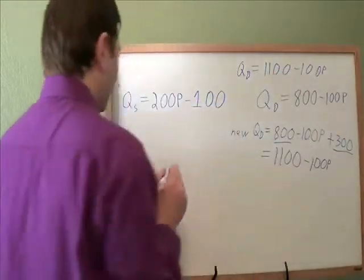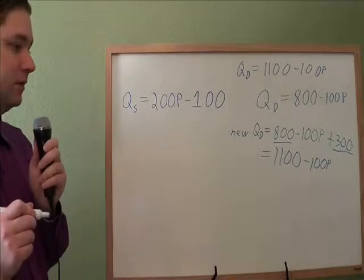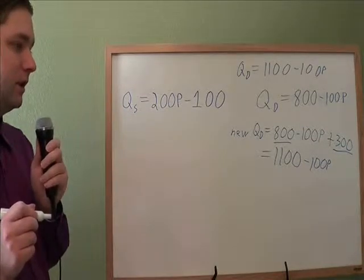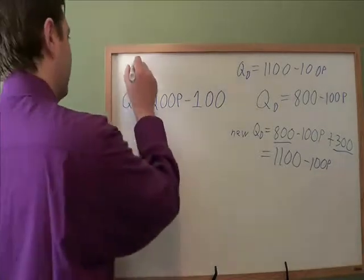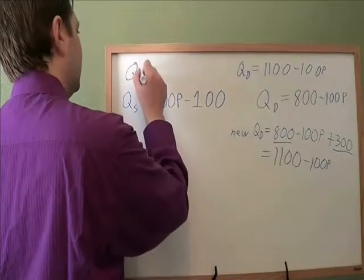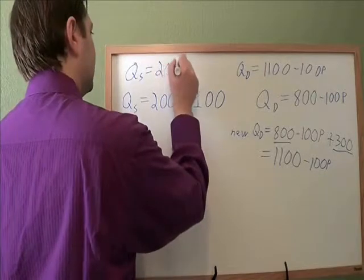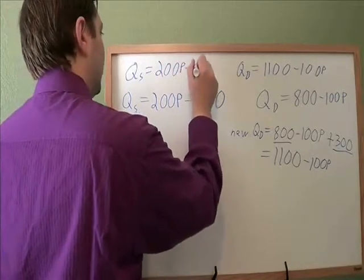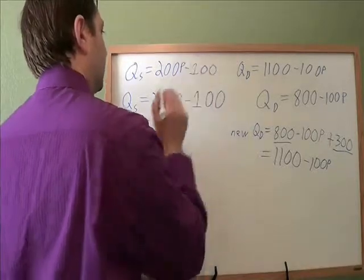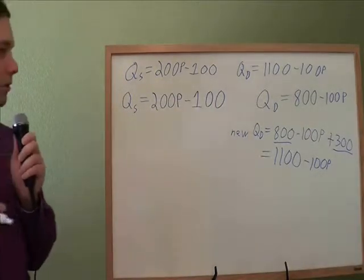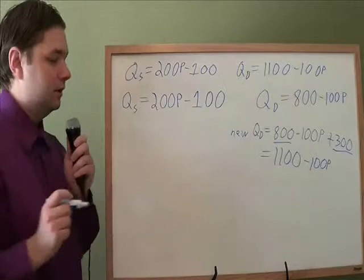What's the new quantity supplied? Well, if you're selling apples, you don't really care about advertising. You just care about what price people are willing to pay. Nothing has changed for you. It hasn't gotten any harder or easier for you to make apples. So the new QS is just the old QS, 200p minus 100. And those are the new quantity supply and quantity demand formulas.